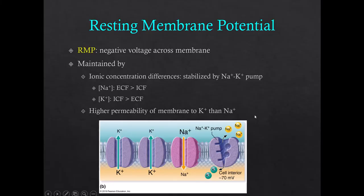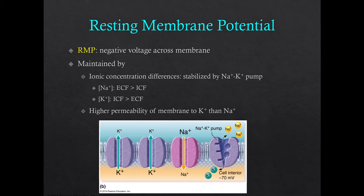Before we can get to action potentials, we have to talk about resting membrane potential. Every cell in your body has a negative voltage across their membrane — an electrical current essentially — across their phospholipid bilayer membranes, where the interior side of the membrane is negative compared to the exterior side. What sets up the resting current is the fact that we have different ion concentrations inside the cell and outside the cell.